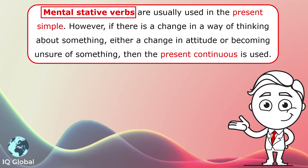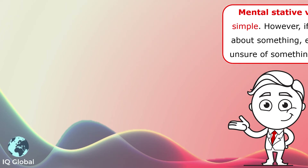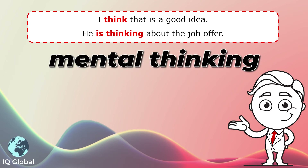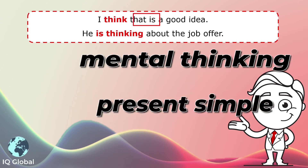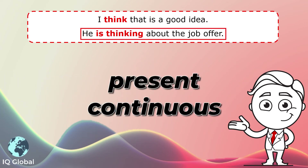Mental stative verbs are usually used in the present simple. However, if there is a change in a way of thinking about something — either a change in attitude or becoming unsure of something — then the present continuous is used. For example: I think that is a good idea. This is somebody's mental thinking, what they feel — present simple. The second example is in the present continuous: he is thinking about the job offer. His way of thinking is changing; he is thinking about what he will do.